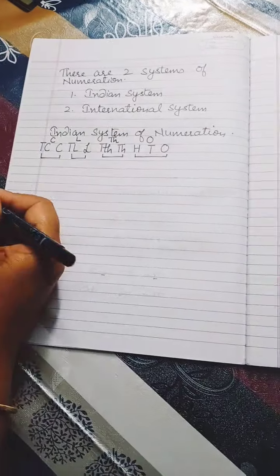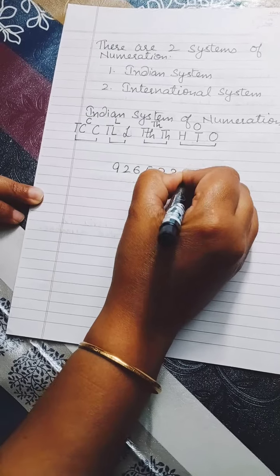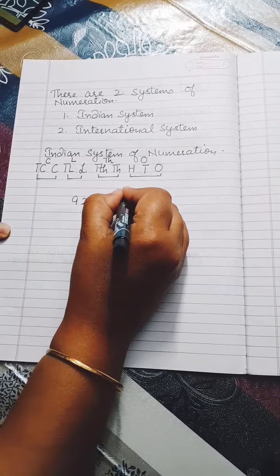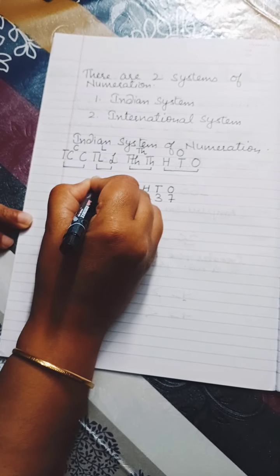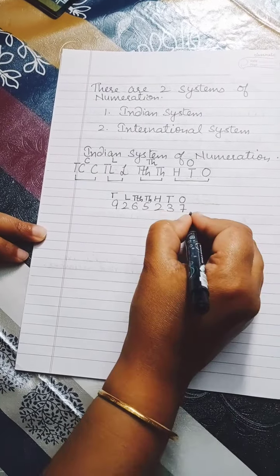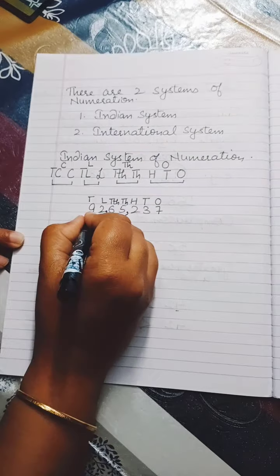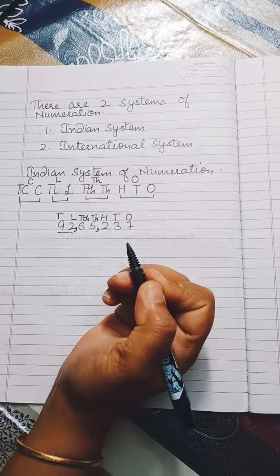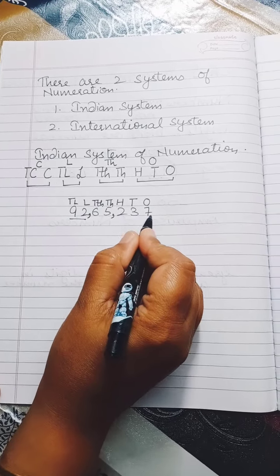Let's take the number 9,26,52,37. The place values are: ones, tens, hundreds, thousands, ten thousands, lakh, and ten lakh. To write it with commas, we put a comma just before the last three digits, then before every two digits. The number reads: ninety-two lakh sixty-five thousand two hundred thirty-seven.